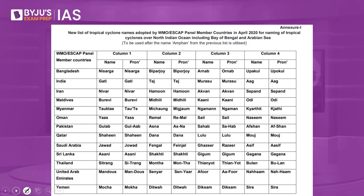When we speak about the naming convention, whenever a cyclone hits a particular country, a name is associated with it. For example, the name Tauktae was given by Myanmar. In the present situation, Asani's name was given by Sri Lanka — this can be very important from the preliminary examination point of view. The name Asani means 'wrath' and comes from the Sinhalese language.